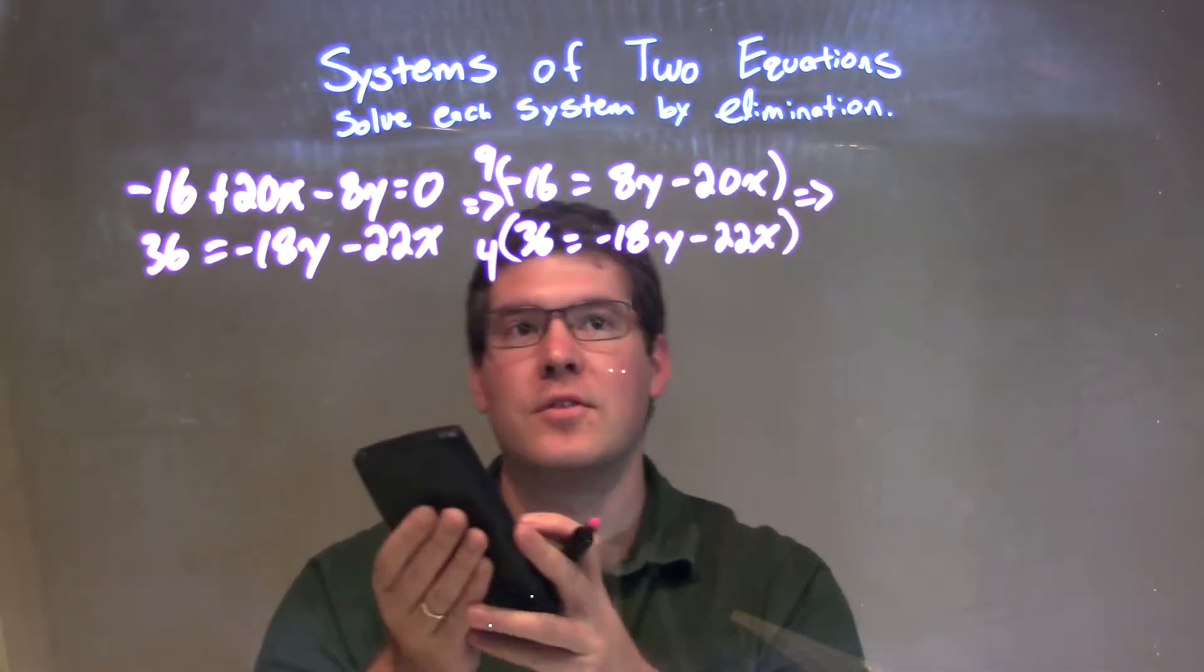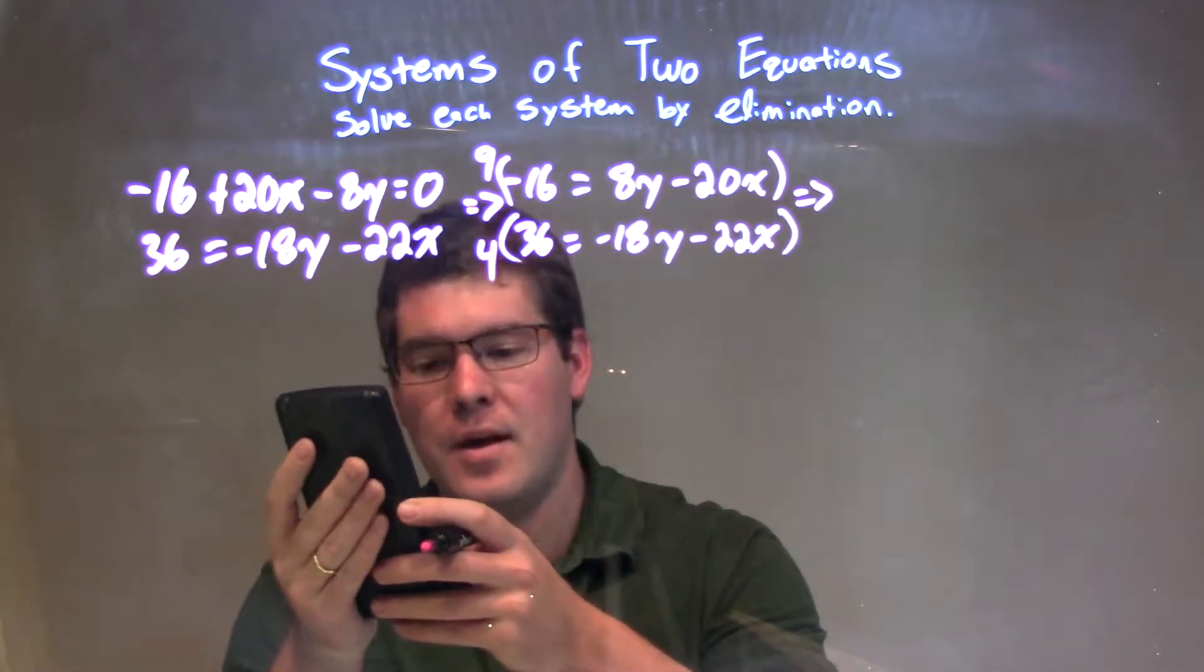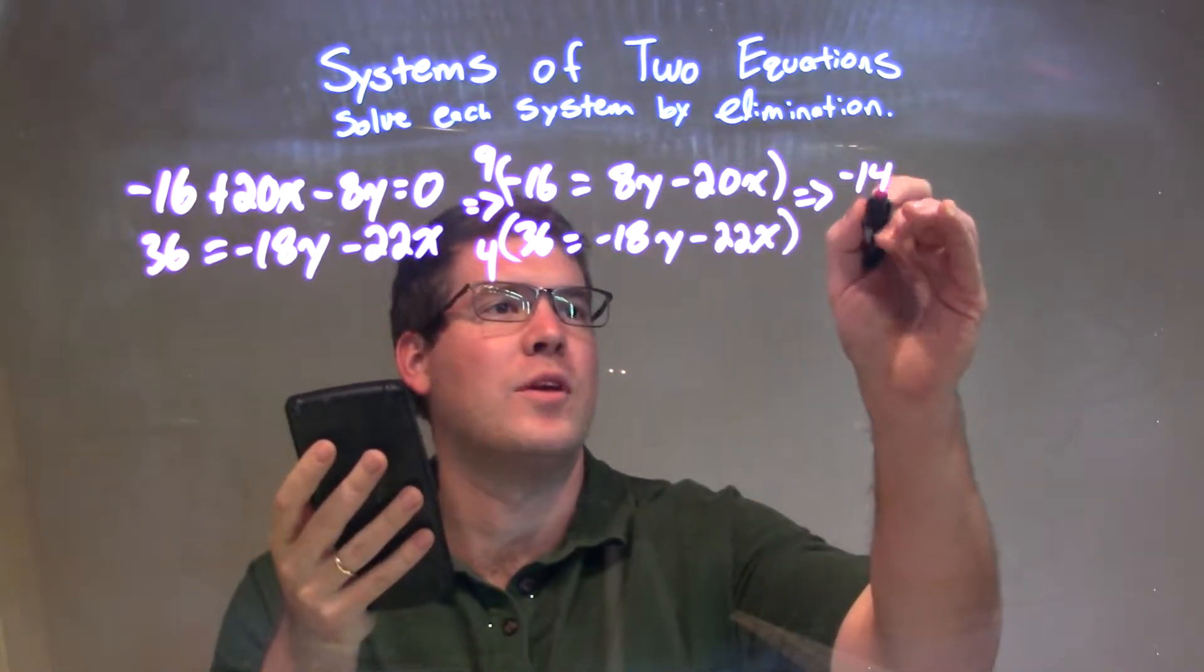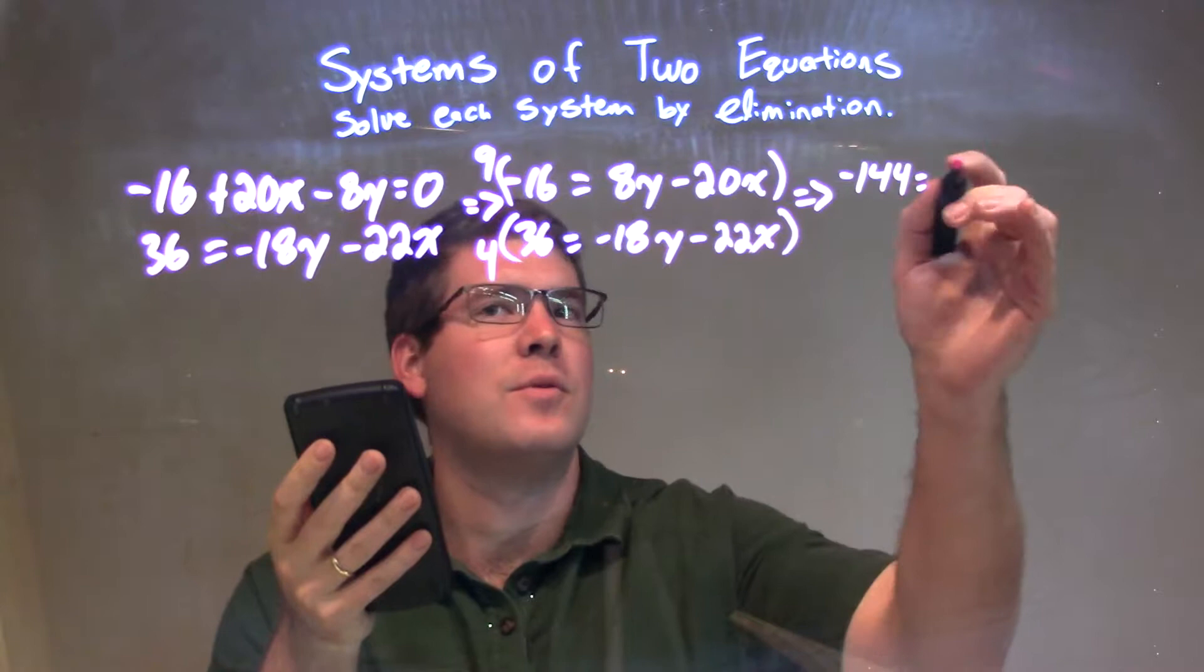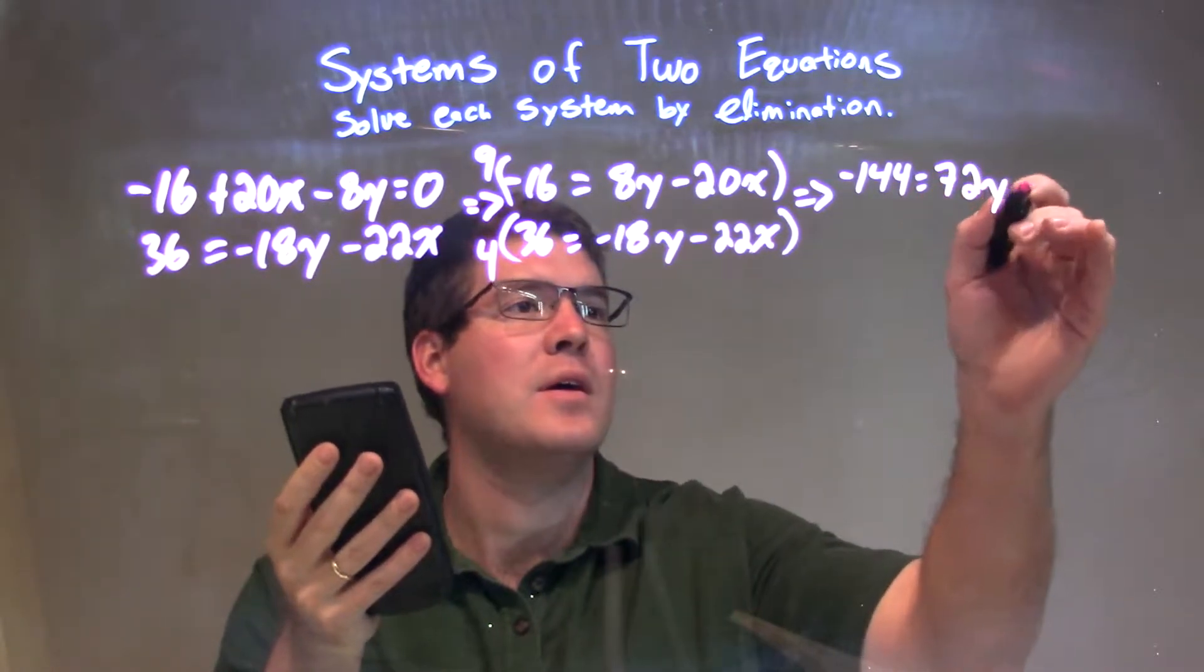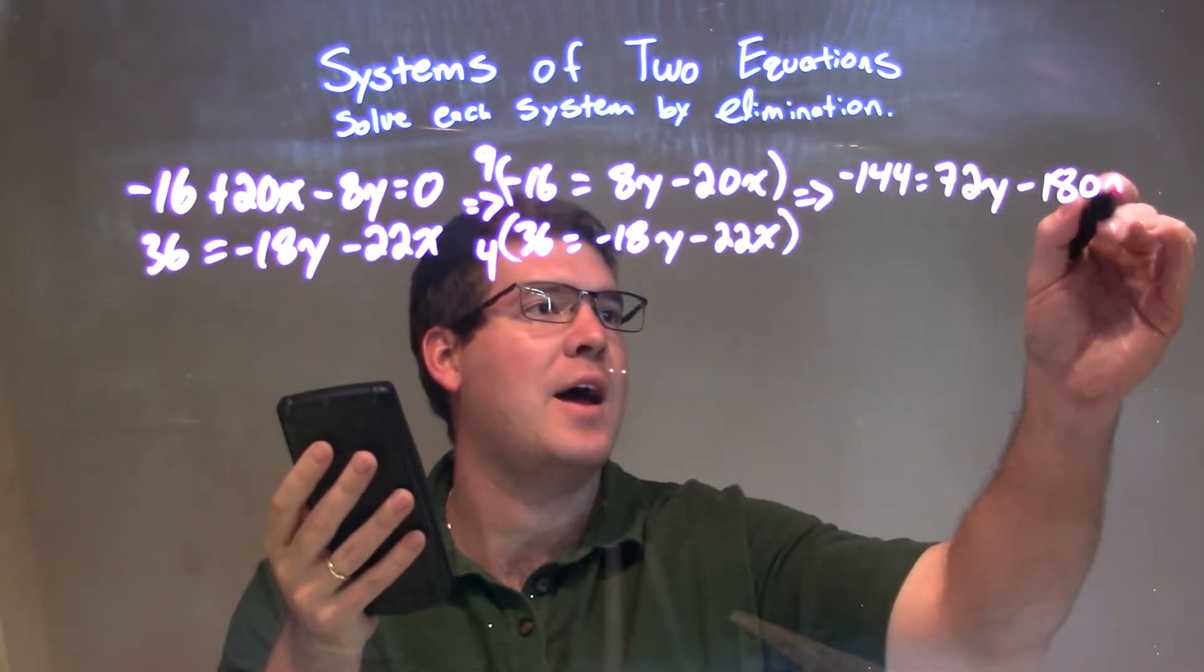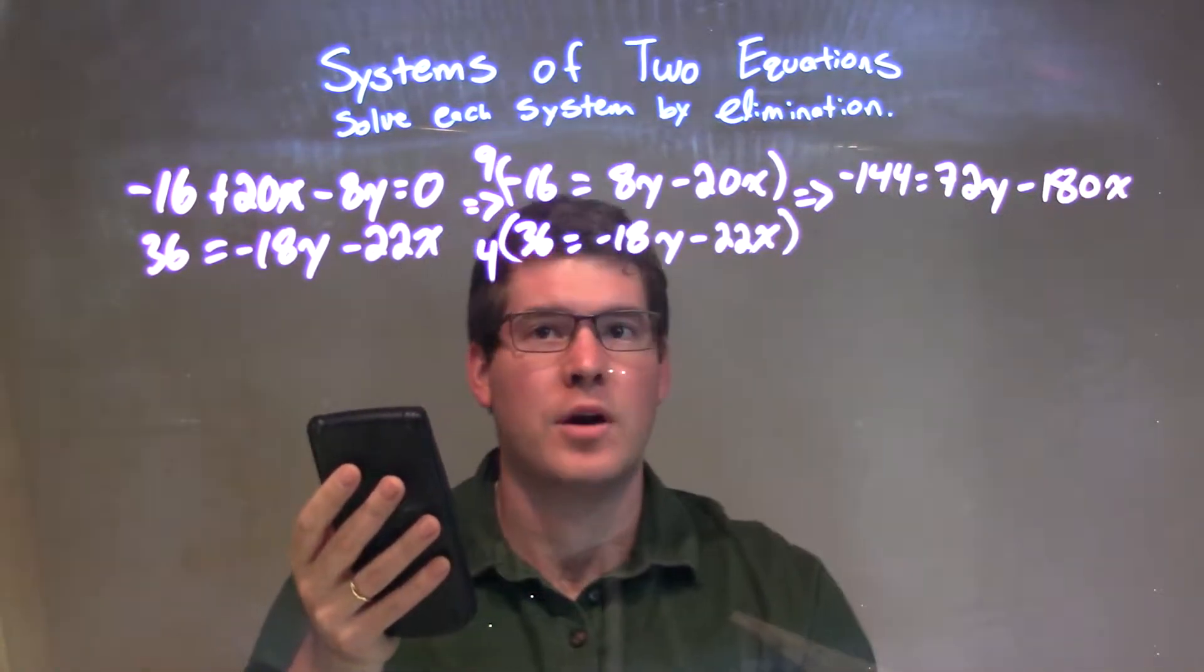9 times negative 16, which I don't know off the top of my head. 9 times negative 16 is negative 144, and that's equal to 9 times 8y, which is 72y minus 9 times 20 is 180x. So, negative 180x.